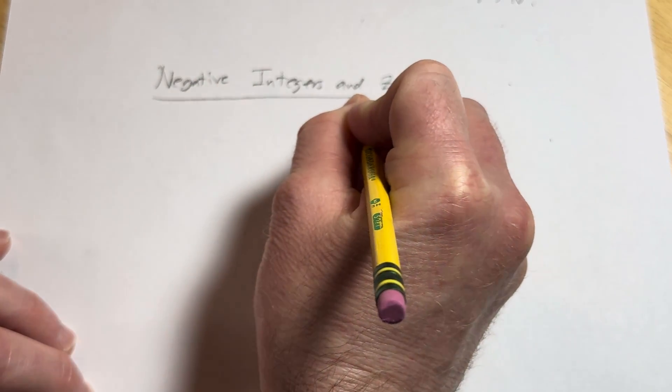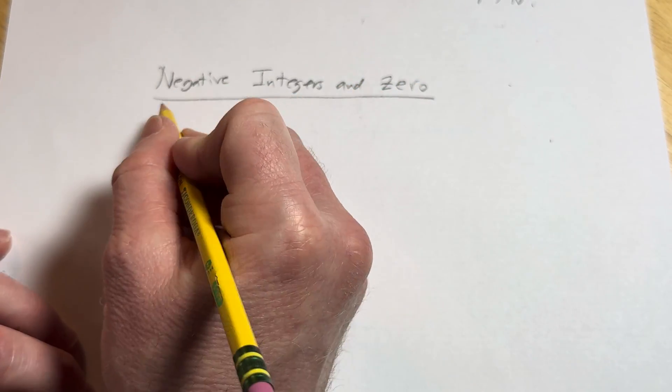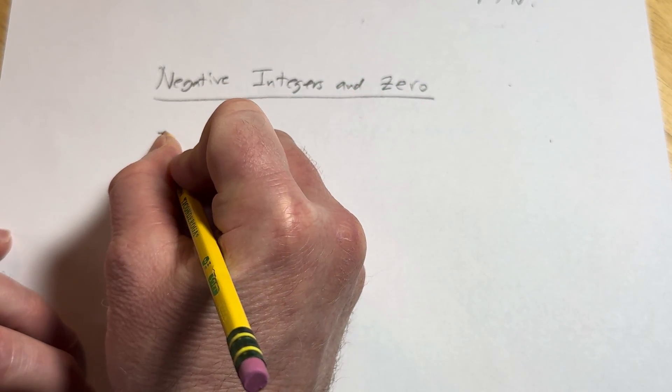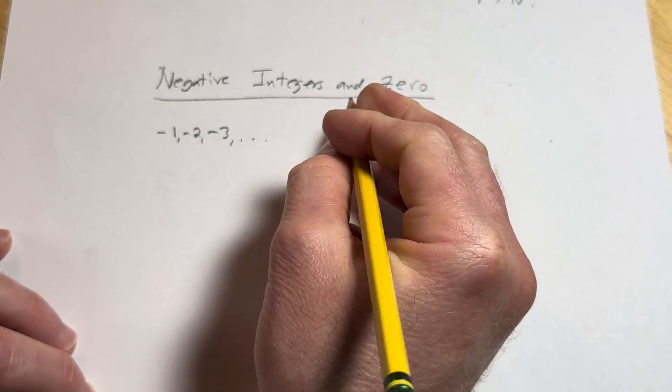This is a set, and it's basically the set containing these elements: negative one, negative two, negative three, and so on, and zero.